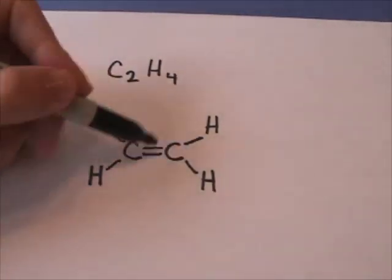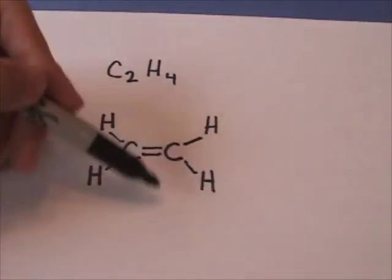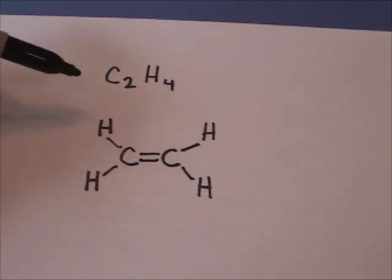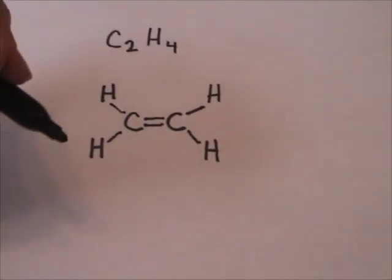This carbon has two, four, six, eight valence electrons. It's happy. Each one of those hydrogens has one bond, two valence electrons. They're happy.